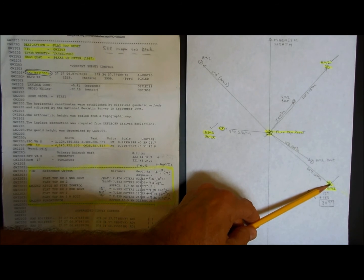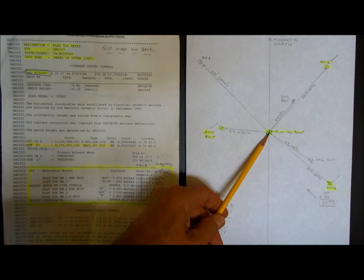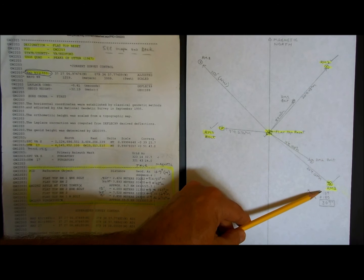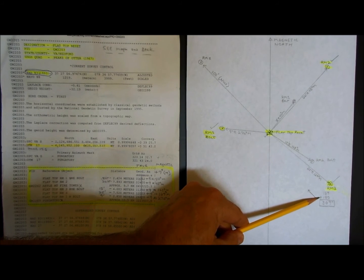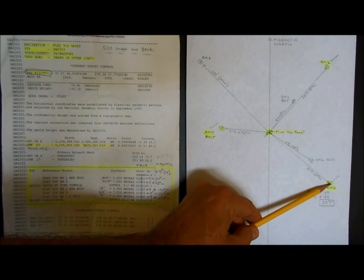That's the bearing if you're standing here, but I don't know where this is yet because this is the first one that I found. Well, I know if I'm standing there, it's 25 feet back to here, but the bearing, you have to add 180 degrees to it to get the bearing standing here.